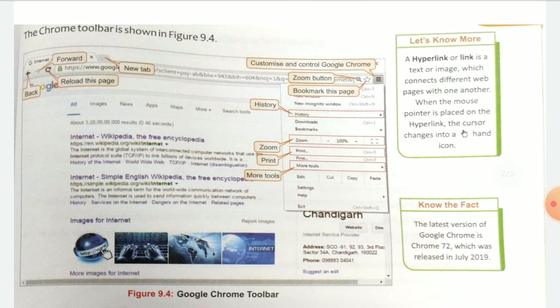The Chrome toolbar is shown in Figure 9.4. You can see how Google Chrome looks. First of all, it is a window — a rectangular window. When you see the software open, you can see the internet.